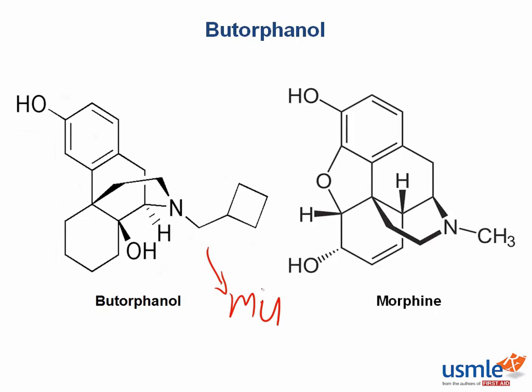Morphine is a full agonist also at the mu receptor. In the presence of a full opioid agonist, butorphanol competes for mu receptors with morphine but it isn't as good at activating the G-protein coupled receptor. So there's less of an opioid effect. Taken to the extreme, this can cause withdrawal symptoms if the patient was previously taking a full opioid agonist.